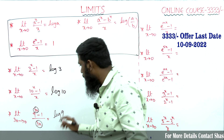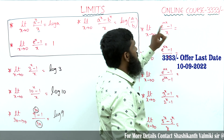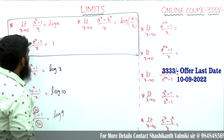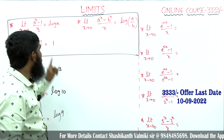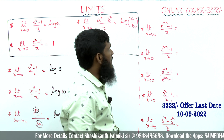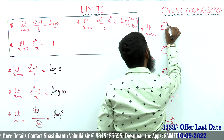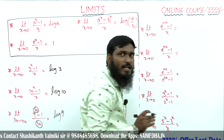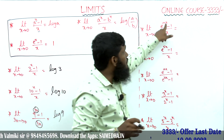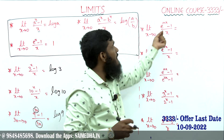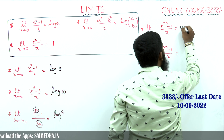Next: limit x tends to 0, e^(mx) minus 1 divided by x. Whenever we have e^x minus 1 divided by x it equals 1, but here we have mx in the power and only x in the denominator — they are not the same. In this case, we take the coefficient of x from the power, so the answer is directly m.